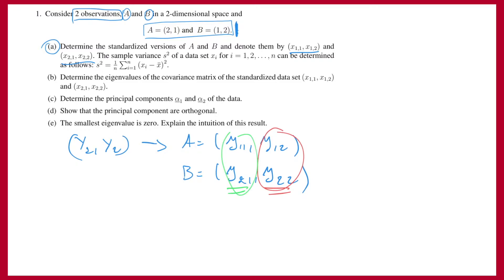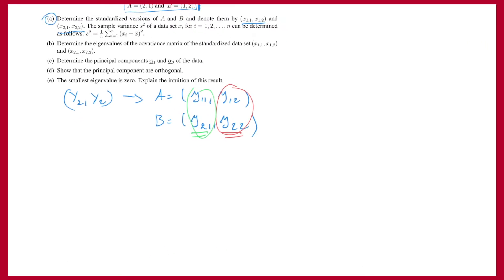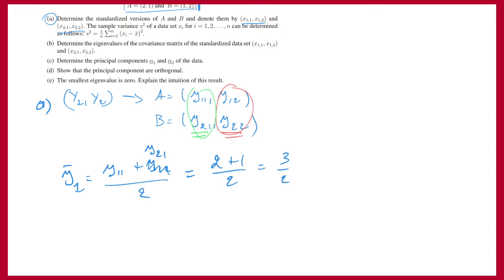What we will do is determine the mean and the variance of these columns. Starting with the empirical mean: the empirical mean of y1 is denoted by y-bar 1 and given by (y11 + y21) / 2, which is (2 + 1) / 2 = 3/2. Similarly, the empirical mean of the second component is (y12 + y22) / 2, which is also 3/2. You can clearly see that the data is not standardized because the mean is not 0.